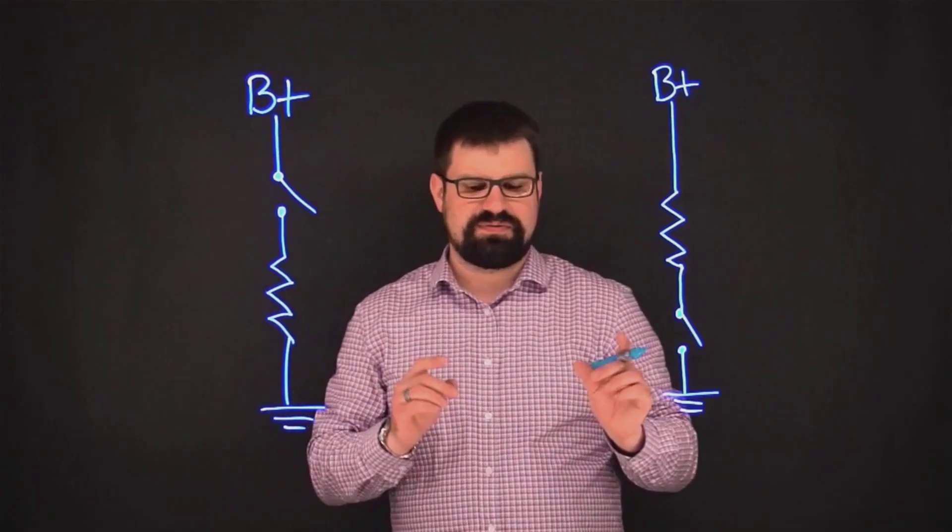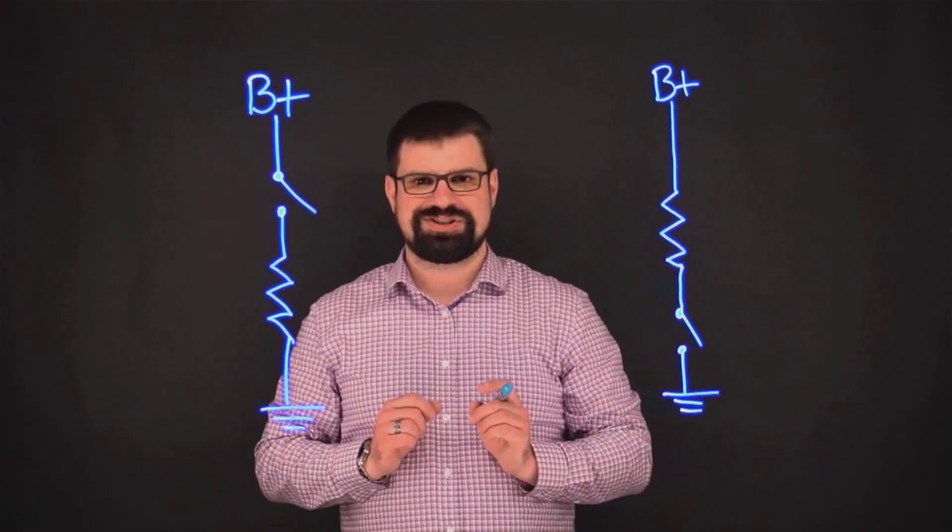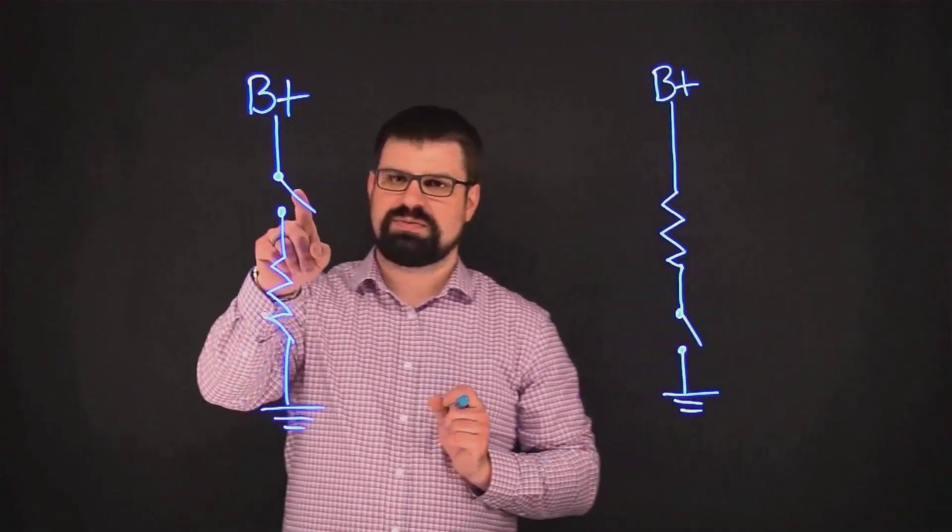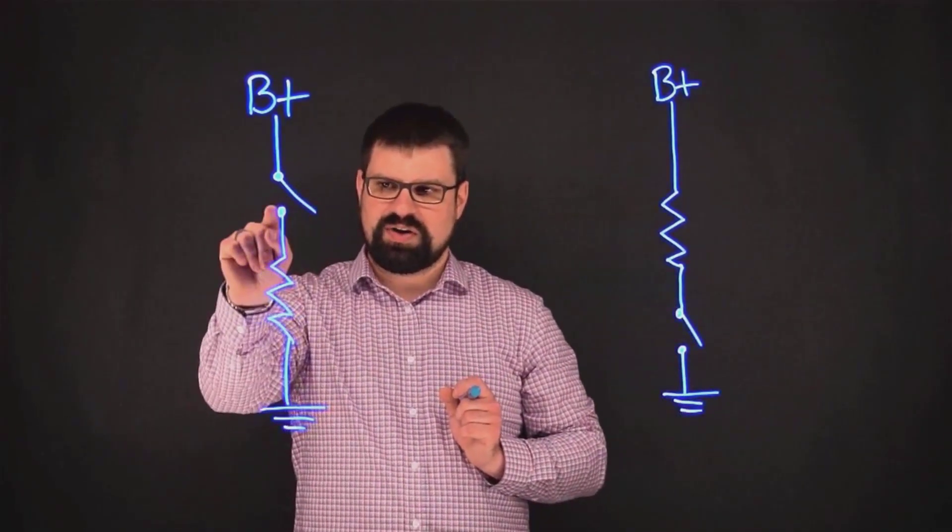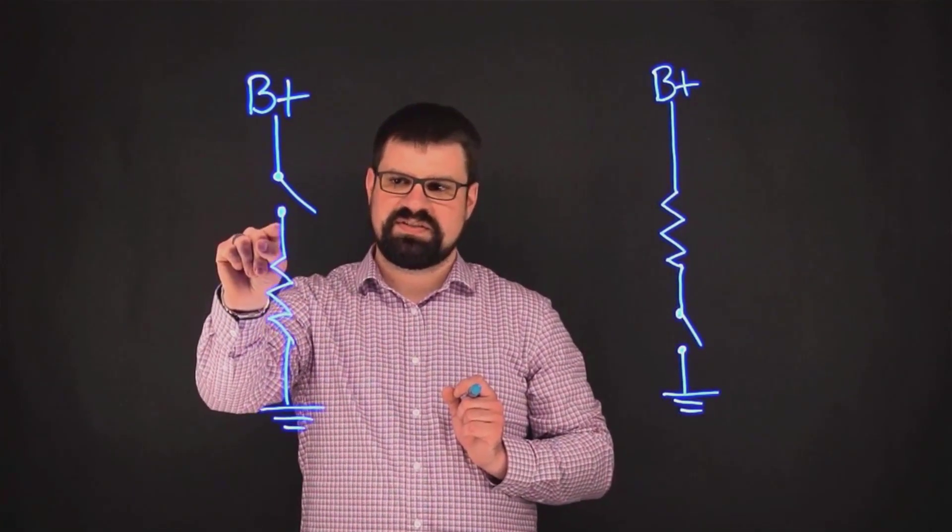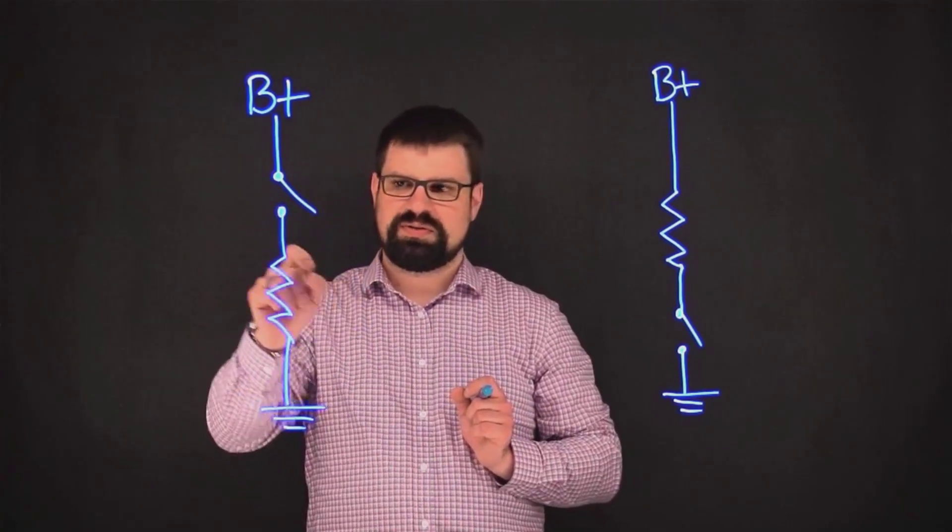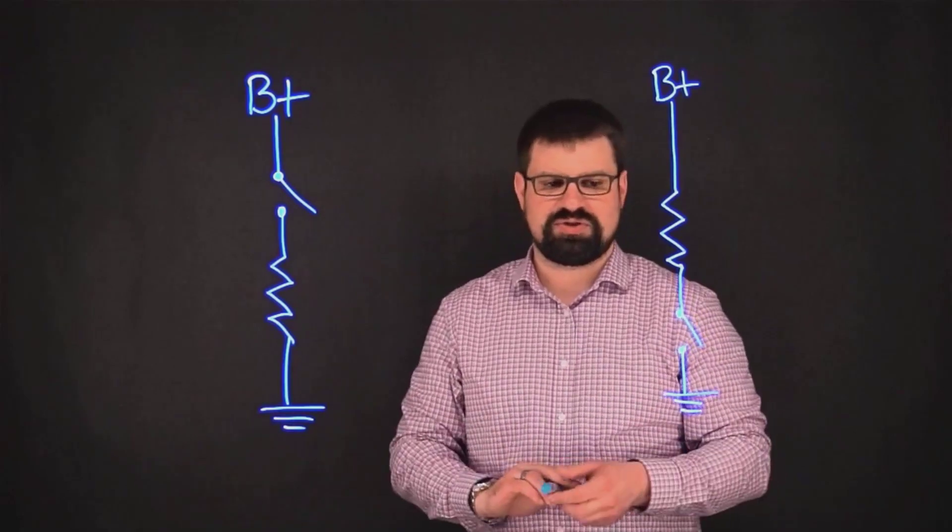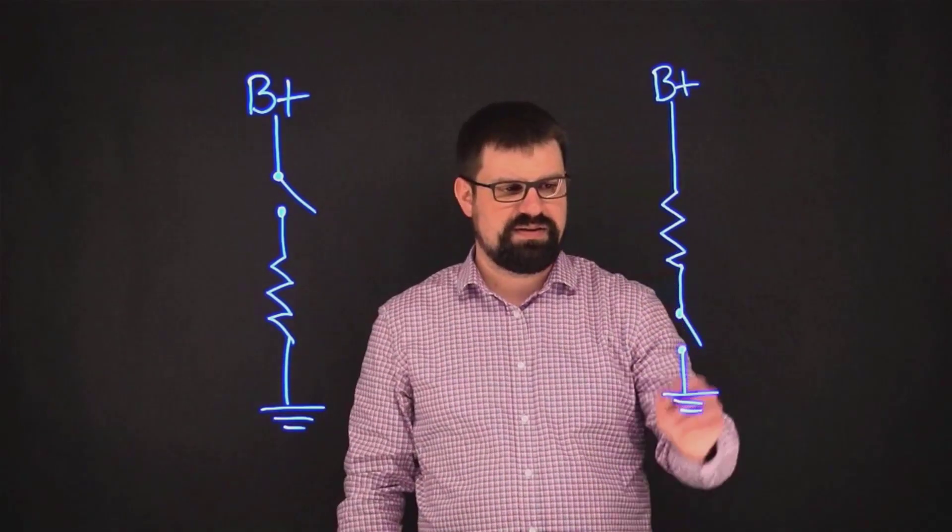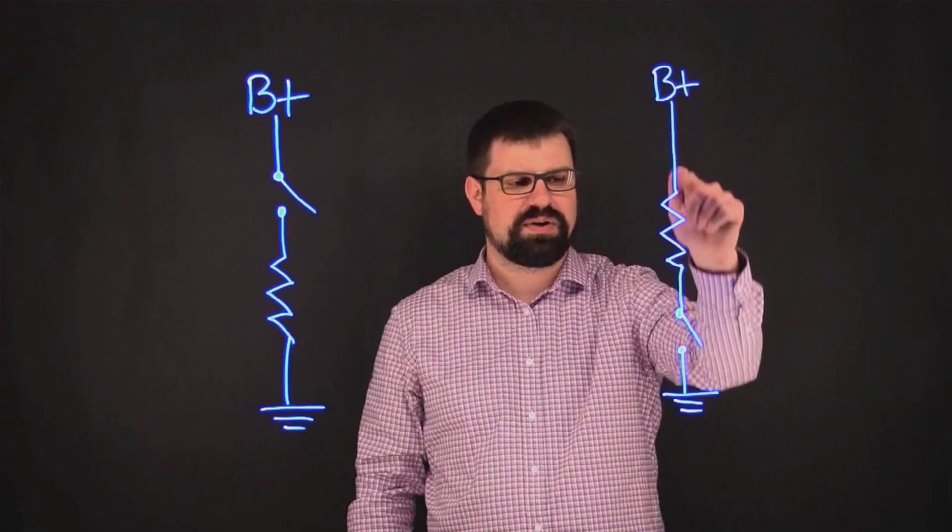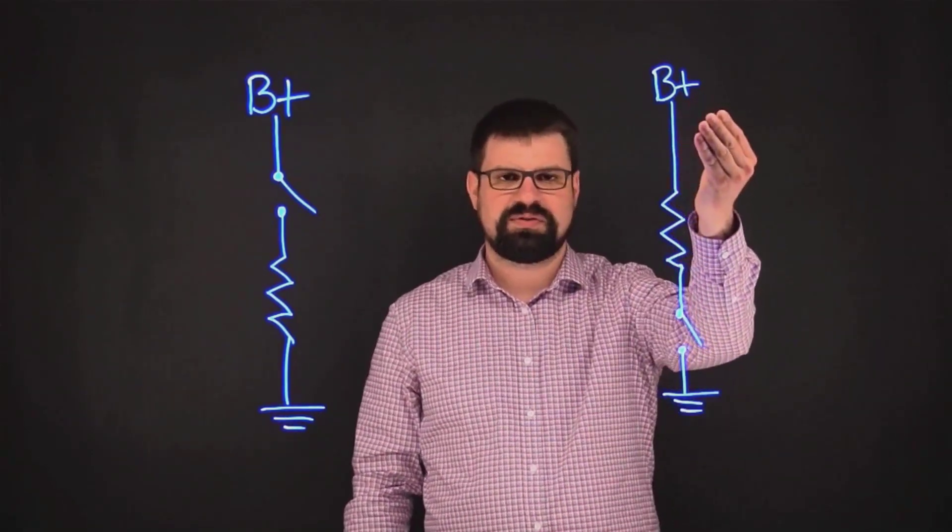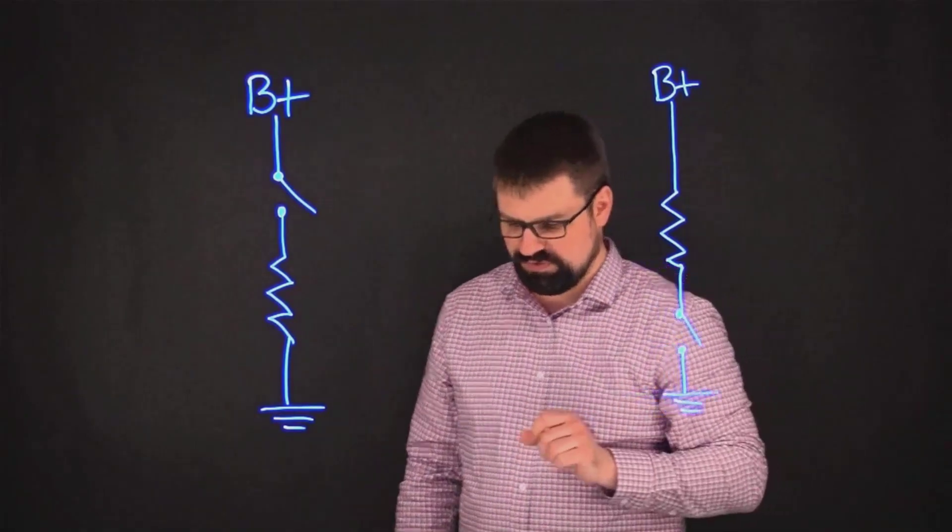So now what I'd like to do is spend a few minutes going over expected voltage conditions in these circuits, because when you have a switch power, this wire right here is going to be what we call a resistive path to ground with the switch open, or it's going to be voltage with the switch closed. On your switch ground circuit, you're going to have a resistive path to voltage or power, and then zero volts.